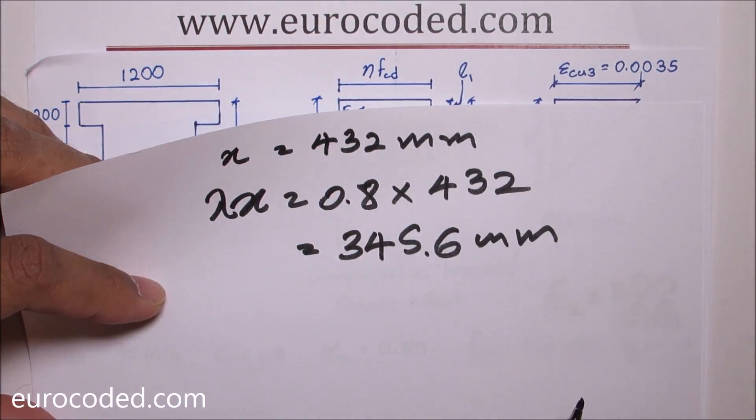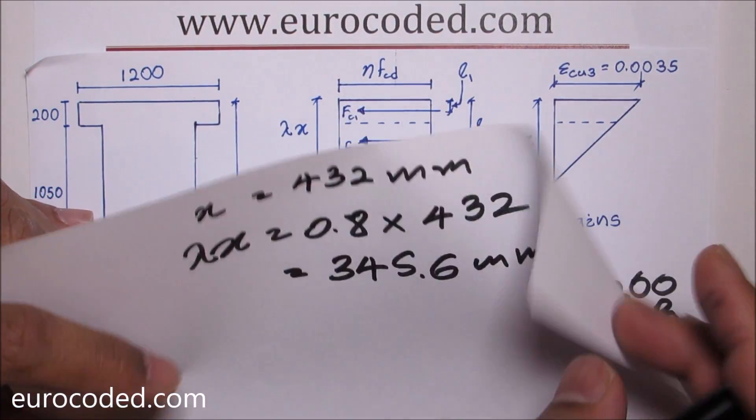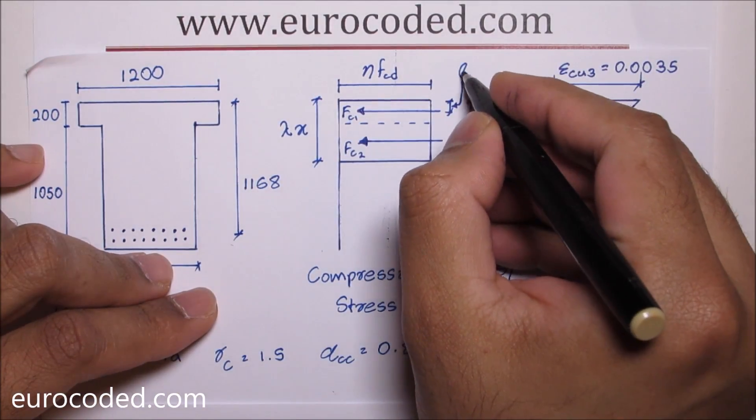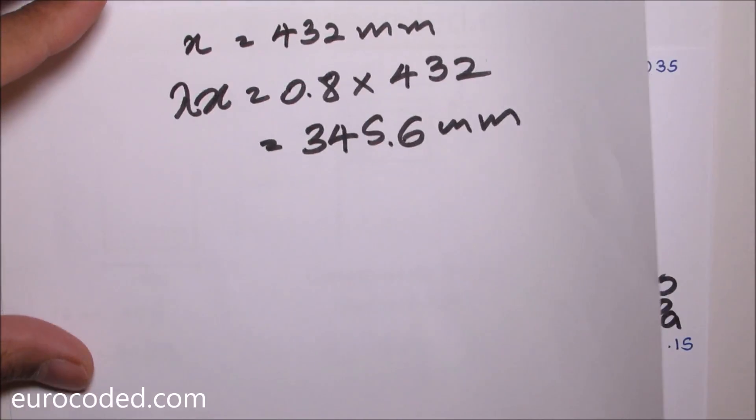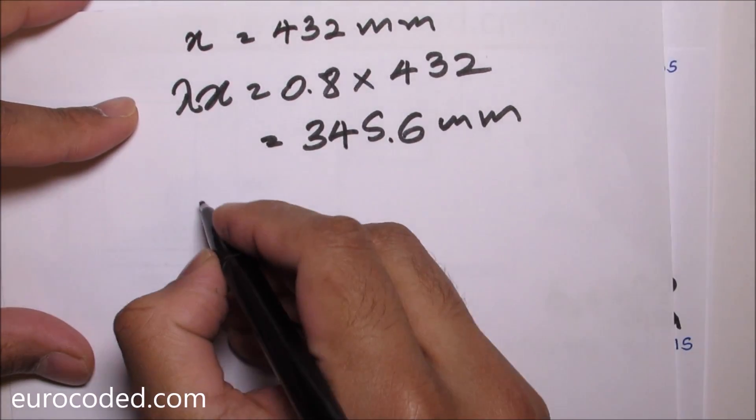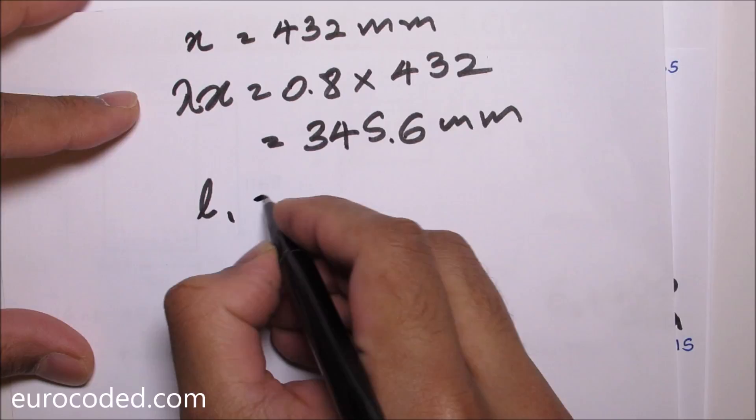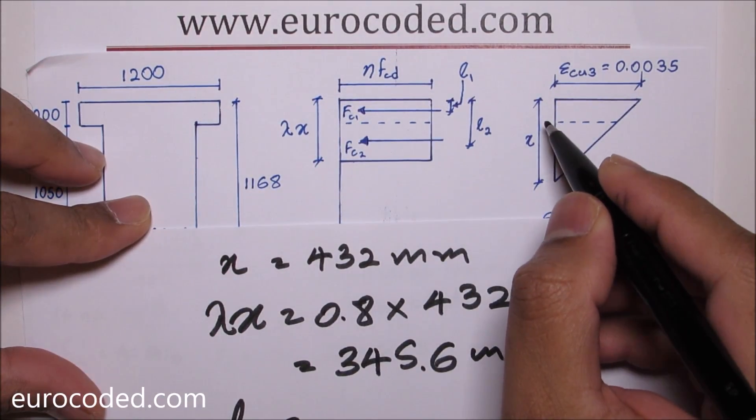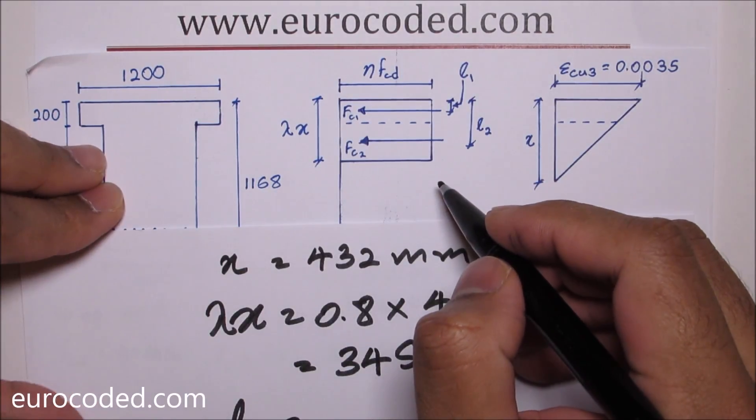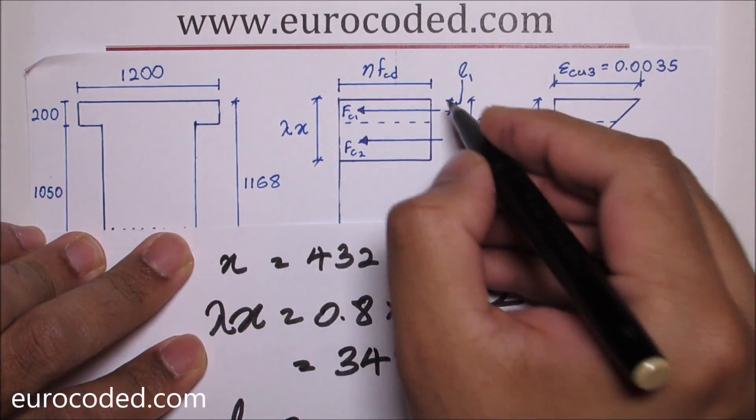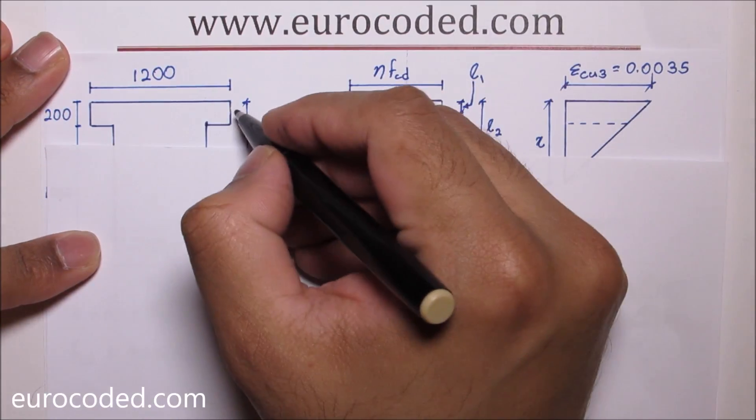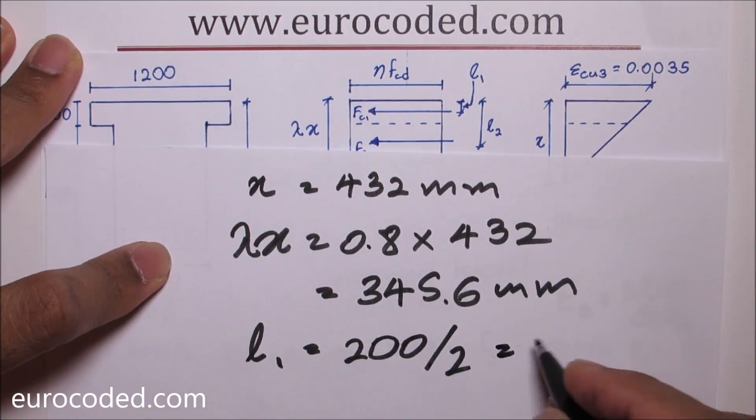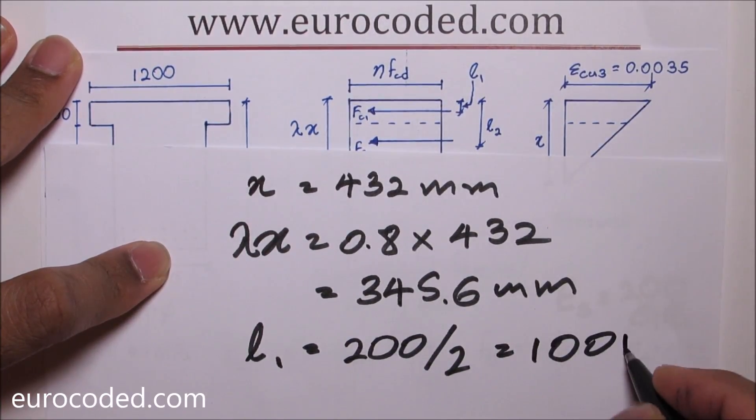Then what we need to do is calculate the centroid of compression zone within the flange, in this area. I've noted that as L1. As you can see our neutral axis is lying below the flange, so we can easily calculate this L1. L1 is half of the depth of the flange which is 200 over 2, so L1 is going to be 100 millimeter.